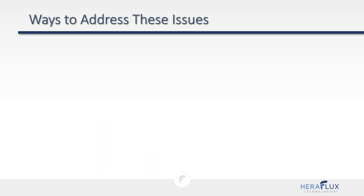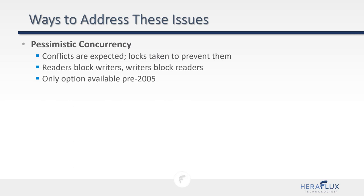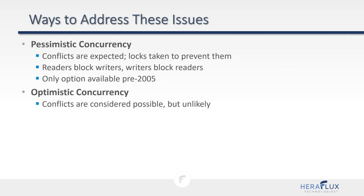There are multiple ways to address concurrency issues. Pessimistic concurrency is the classic SQL Server model — you're expecting conflicts, so you take locks on your data to prevent them. Readers block writers and writers block readers. Before SQL Server 2005, pessimistic concurrency was the only option. Starting in 2005, Microsoft introduced optimistic concurrency: conflicts are considered possible but unlikely. Optimistic concurrency uses row versioning, meaning less locking, and hopefully the version engine handles things for us.